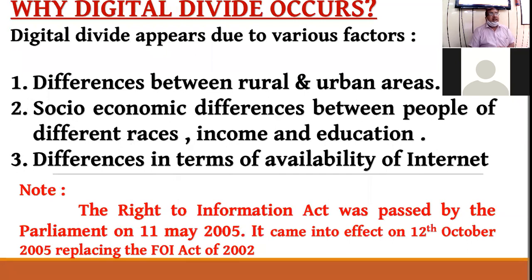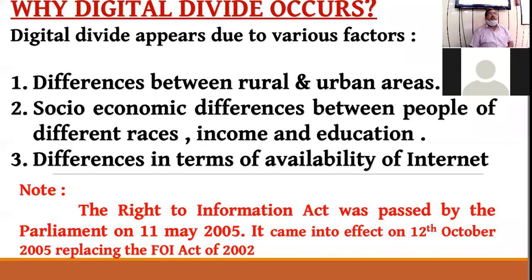What are the factors causing digital divide? First is the division between rural and urban areas. Second is discrimination between persons on the basis of income and education level — socio-economic differences. Third is the difference in availability of internet: in rural areas internet facilities are very less, but in urban areas facilities are more. These three are the important factors that give rise to digital divide.